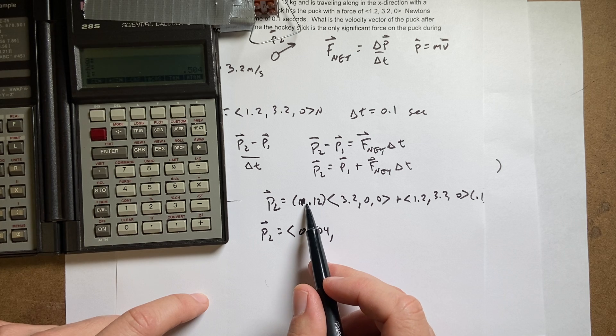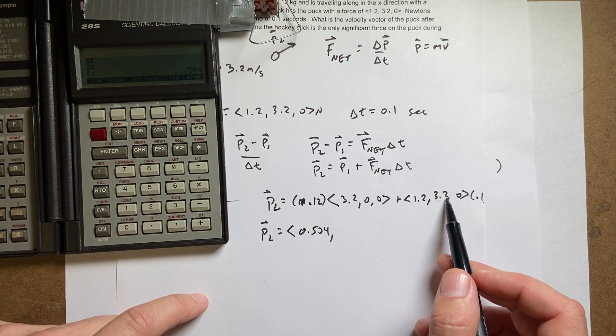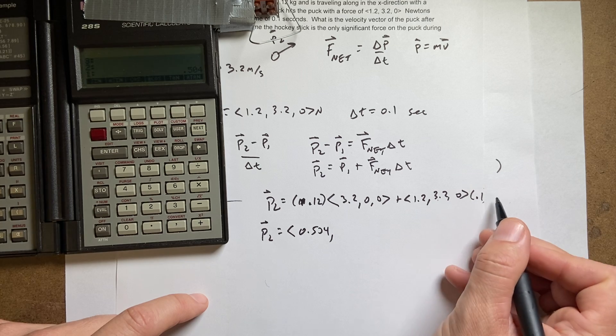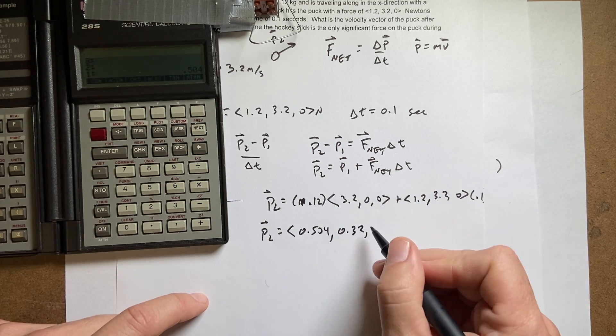Now for the y direction. This is going to be 0.12 times zero plus 0.32 times 0.1. So 0.32 times 0.1 is 0.32. And then zero. And that's kilogram meters per second.